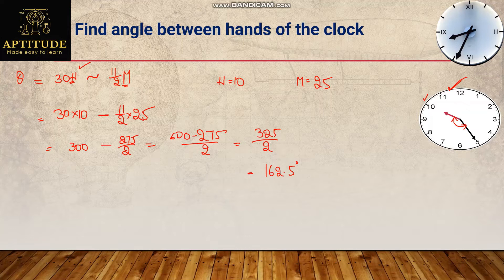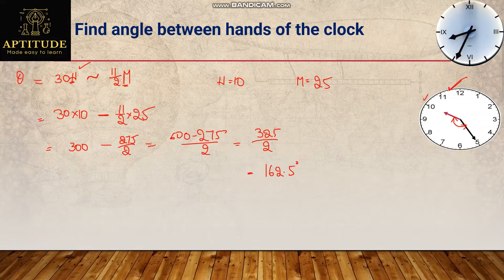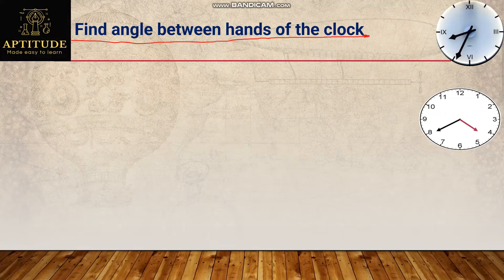Let's see another example of a similar type: find the angle between the hands of the clock. The question type is the same but the time has changed — previously it was 10:25, now it is 4:40. Observe the clock: is the hours hand or the minutes hand covering more angle? Here the minutes hand is covering more angle.